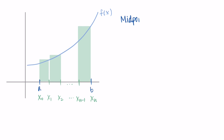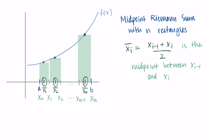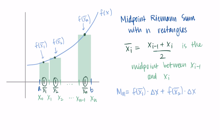For the midpoint Riemann sum, instead of using the left or right point of each sub-interval, we use the midpoint. I use bar notation — x̄_i — to represent these midpoints, since a bar typically denotes an average. x̄_i = (x_{i-1} + x_i) / 2, averaging the left and right endpoints of each sub-interval. We repeat this process using the x̄_i points, starting at i = 1 and going up to n, giving the sum from i = 1 to n of f(x̄_i)·Δx.